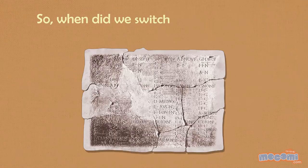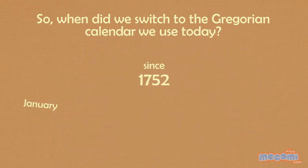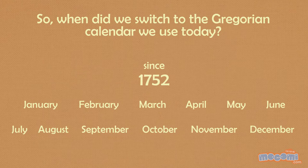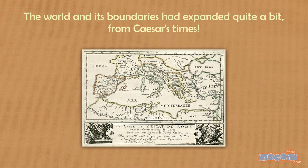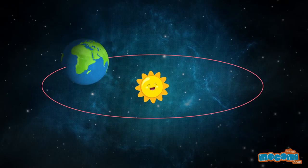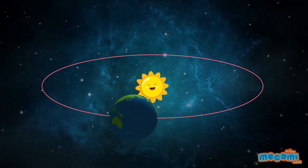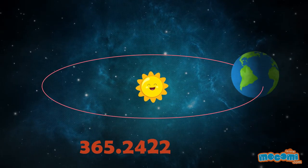So, when did we switch to the Gregorian calendar we use today? The same calendar had been used since then till 1752 when the Gregorian calendar was adopted all over the world to synchronize it to the English and American colonies. The world and its boundaries had expanded quite a bit in Caesar's times. The Gregorian calendar fixed the Julian calendar error of calculating one revolution of earth around the sun to take 365.2422 days into account.